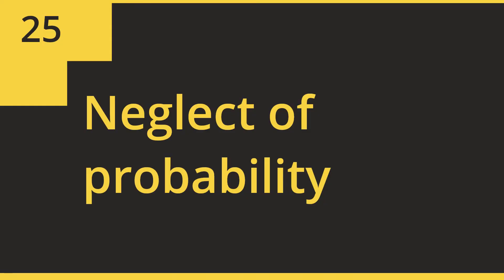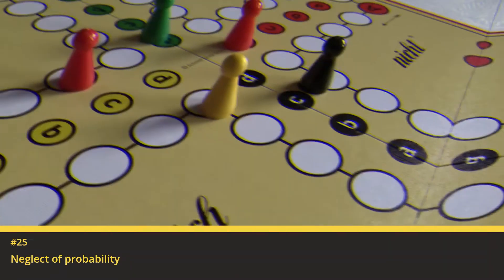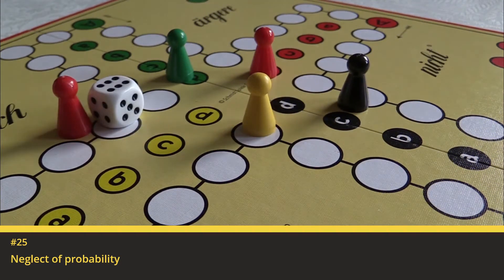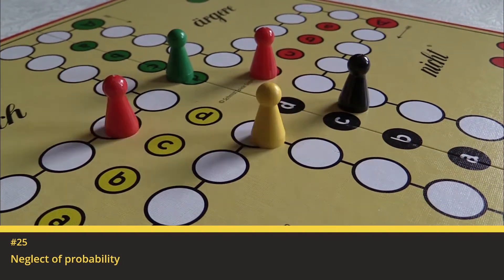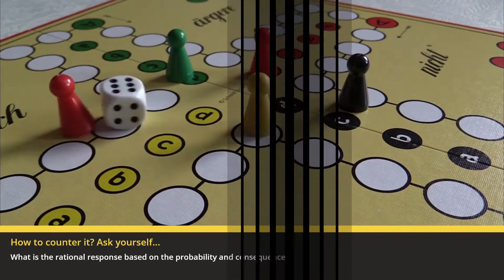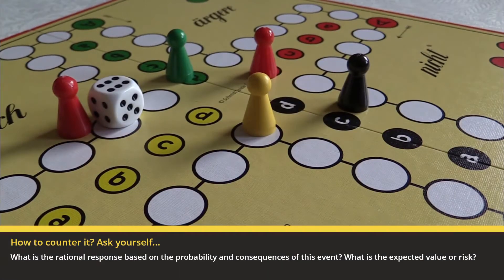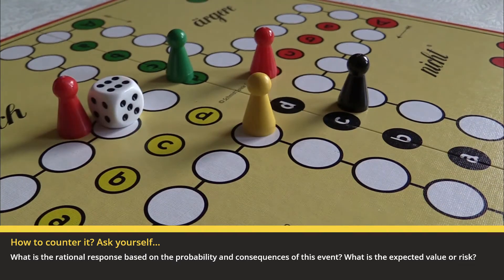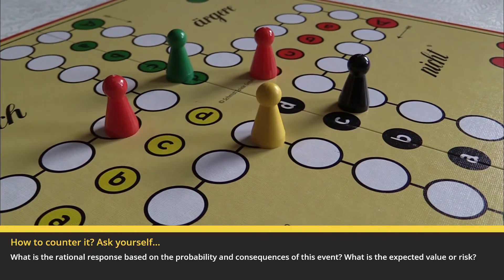25. Neglect of Probability: We lack an intuitive grasp of probability, and instead tend to respond to the expected magnitude of an event, instead of its likelihood. How to avoid this bias? Ask yourself: what is the rational response based on the probability and consequences of this event? What is the expected value or risk?